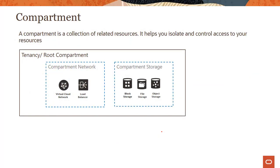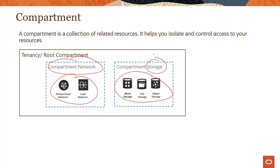We talked about compartments in the OCI architecture module. A compartment is a collection of related resources — network resources go in a network compartment, storage resources in a storage compartment. You can have compartments organized by resource types, geographic location (North America, EMEA), by projects, or by organizational hierarchy. There are multiple ways to create compartments and best practices available in the advanced course.